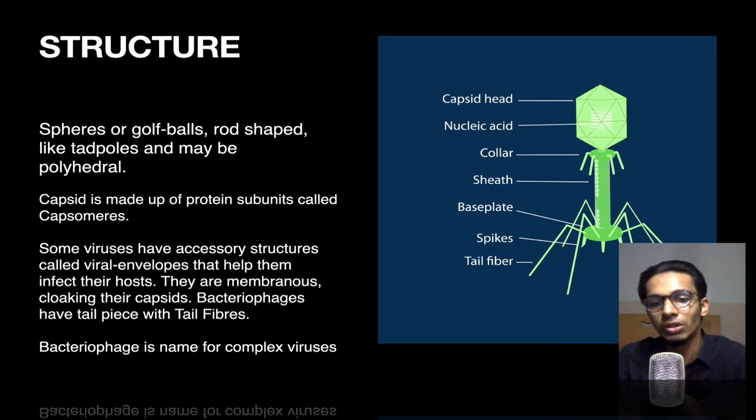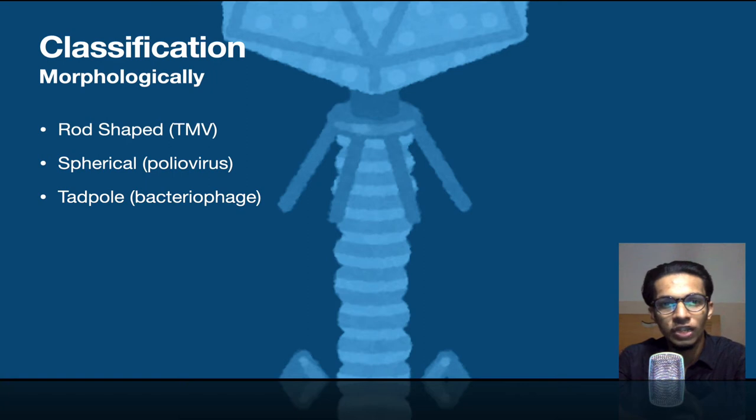Classification morphologically - we have three types. Number one, rod-shaped viruses. The spherical viruses having a circular shape like Earth. And some are like tadpoles. Bacteriophages are the tadpole viruses, polio viruses are spherical ones, and TMV viruses are rod-shaped.